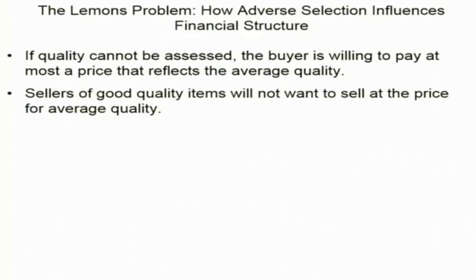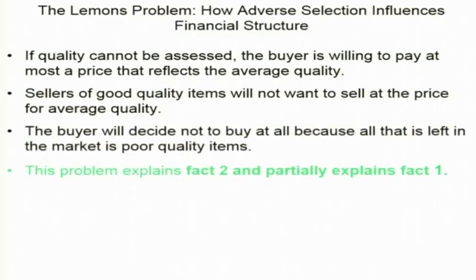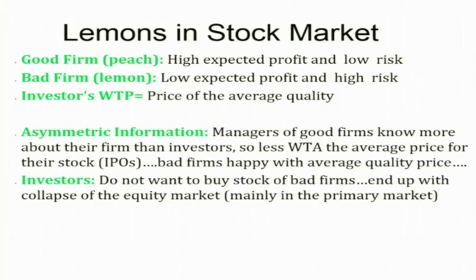So the Lehmann's problem — how adverse selection influences financial structure. We have seen that if quality cannot be assessed, the buyer is willing to pay at most a price that reflects average quality. We discussed this issue in the context of Lehmann's markets. There are good firms and bad firms. Suppose investors cannot distinguish between good firms with high expected profits and low risk, and bad firms with low expected profits and high risk. This would lead to the collapse of the finance market.